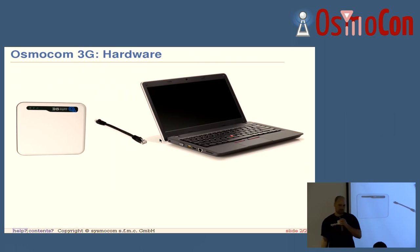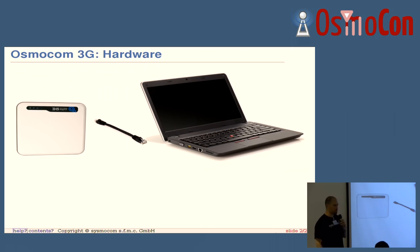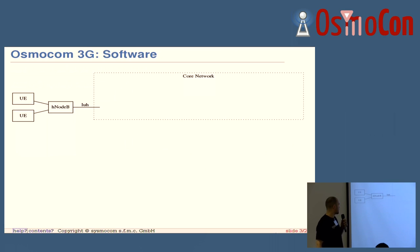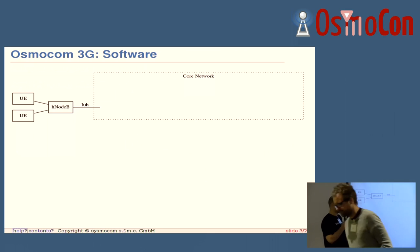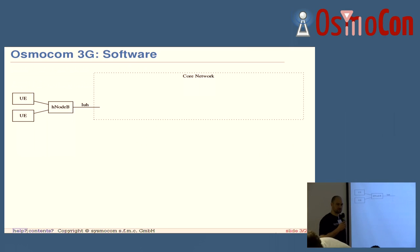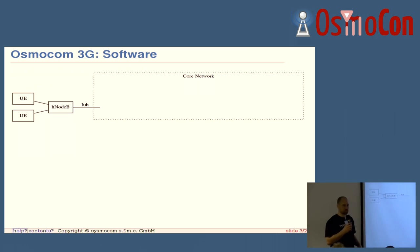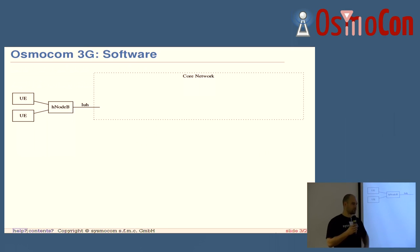Same as with the Sysmo BTS, your basic 3G network can look like this: just your laptop, a cable, and the Nano 3G. That's simple enough, but of course it's harder than that. The Nano 3G exposes the IuH interface which is handy for us. The traditional 3G needs an external RNC, which is sort of like the 2G BSC level but a bit more complex.